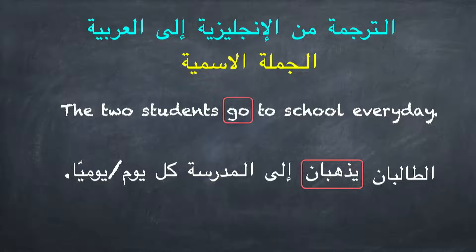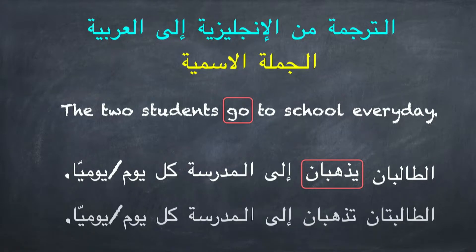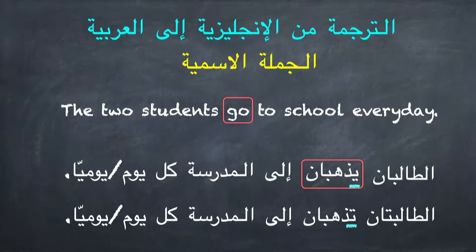لأن الجملة في الإنجليزية لم تحدد كلمة 'students' مذكراً أم مؤنثة، إذن نستطيع أن نكتب: الطالبتان تذهبان إلى المدرسة كل يوم أو يومياً. لاحظوا أيضاً في الترجمة الأولى الفعل مذكر يبدأ بياء، وفي الترجمة الثانية الفعل مؤنث ويبدأ بتاء.